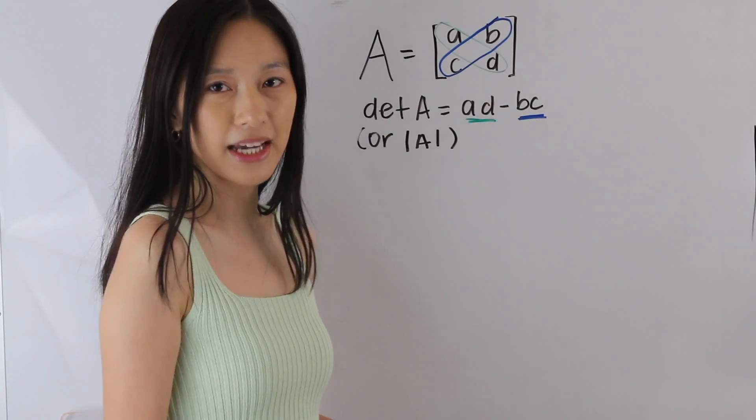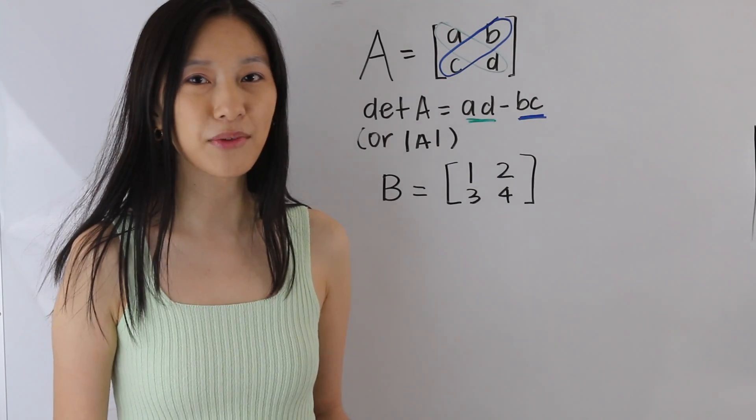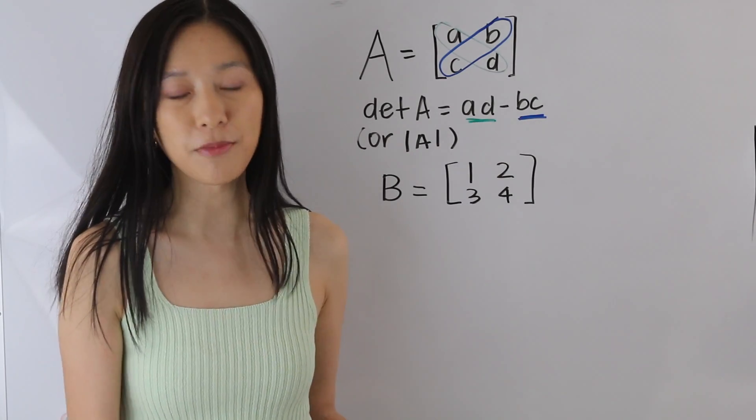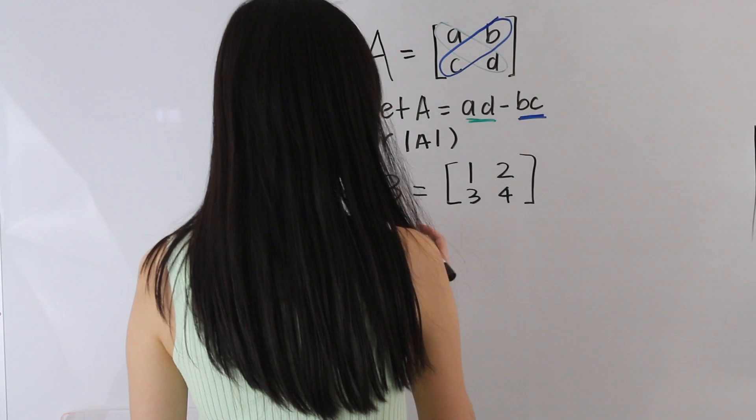So let's go ahead and take a look at an example. In this example here, we have a matrix B, and we want to find its determinant. So let's start off by writing the determinant of B.